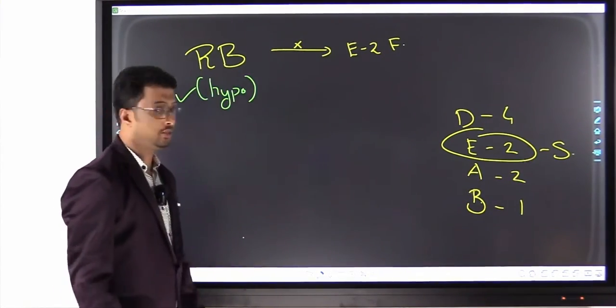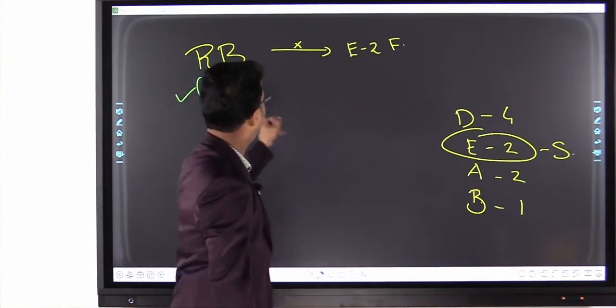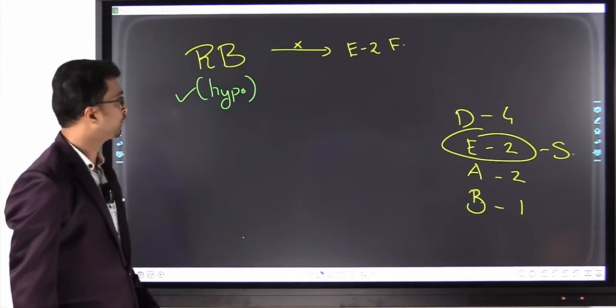So that gene, gene for this E2F is inhibited by whom? RB gene in its hypophosphorylated form.